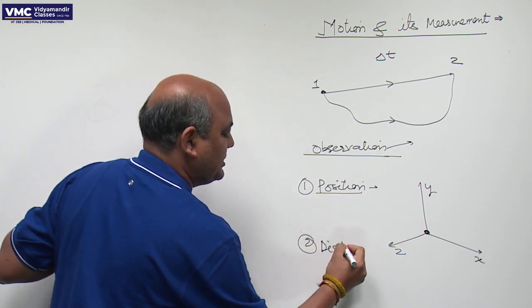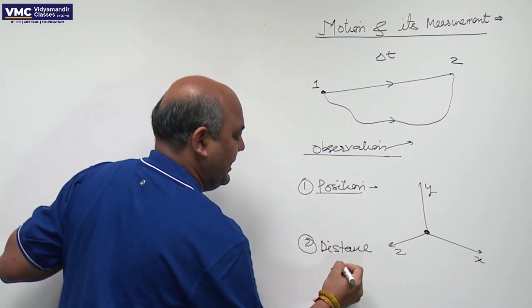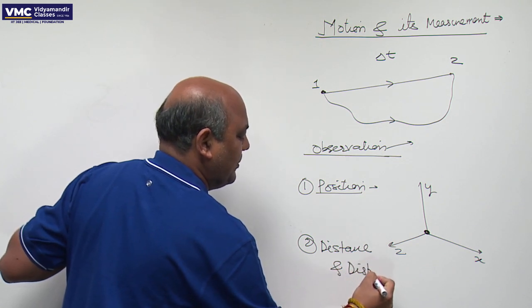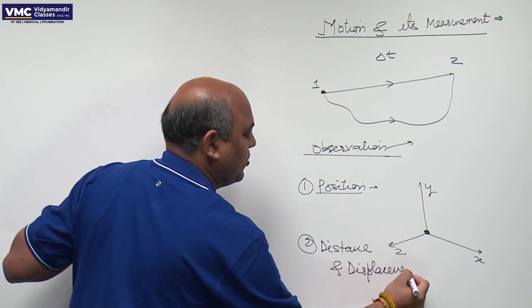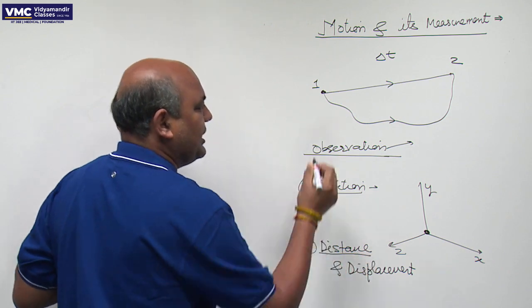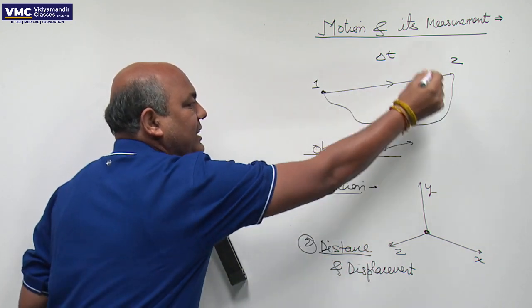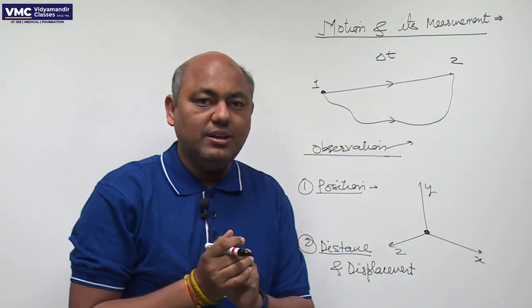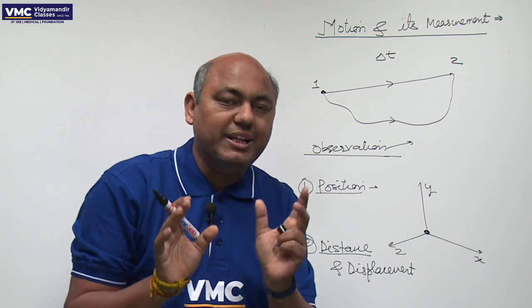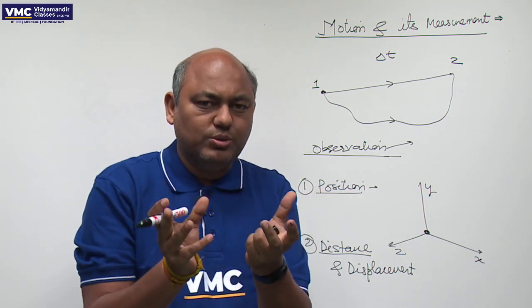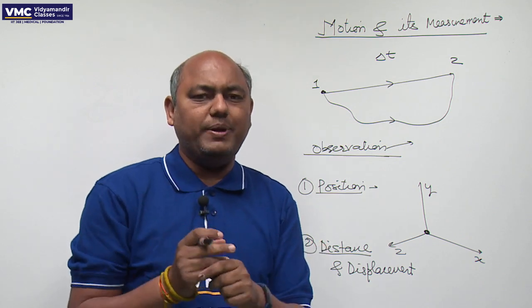Second point is distance and displacement. This is what you have studied in the small classes. The distance means that if we are here, the total length covered by the body is called distance. When you drive a car, there is an odometer in the car. You have seen it. It was digital or mechanical.